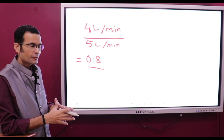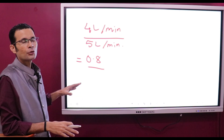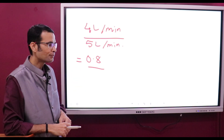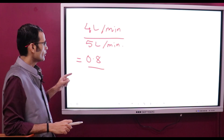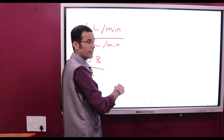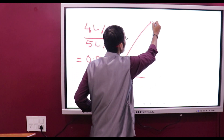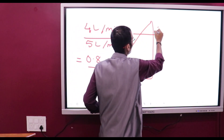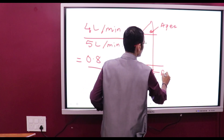The ventilation-perfusion ratio is 4 upon 5, which equals 0.8. This is an averaged-out value, because in the upright posture, gravity influences the ventilation and perfusion ratio. To understand the effect of gravity, there are two scenarios in the upright posture: one at the apex and one at the base of the lung.